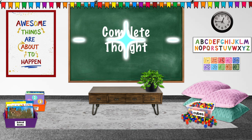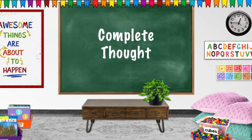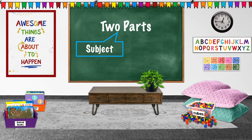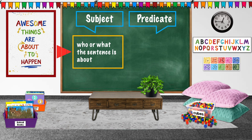In order to express a complete thought, a sentence needs two important parts: a subject and a predicate. The subject tells us who or what the sentence is all about. The predicate tells us what the subject is doing.